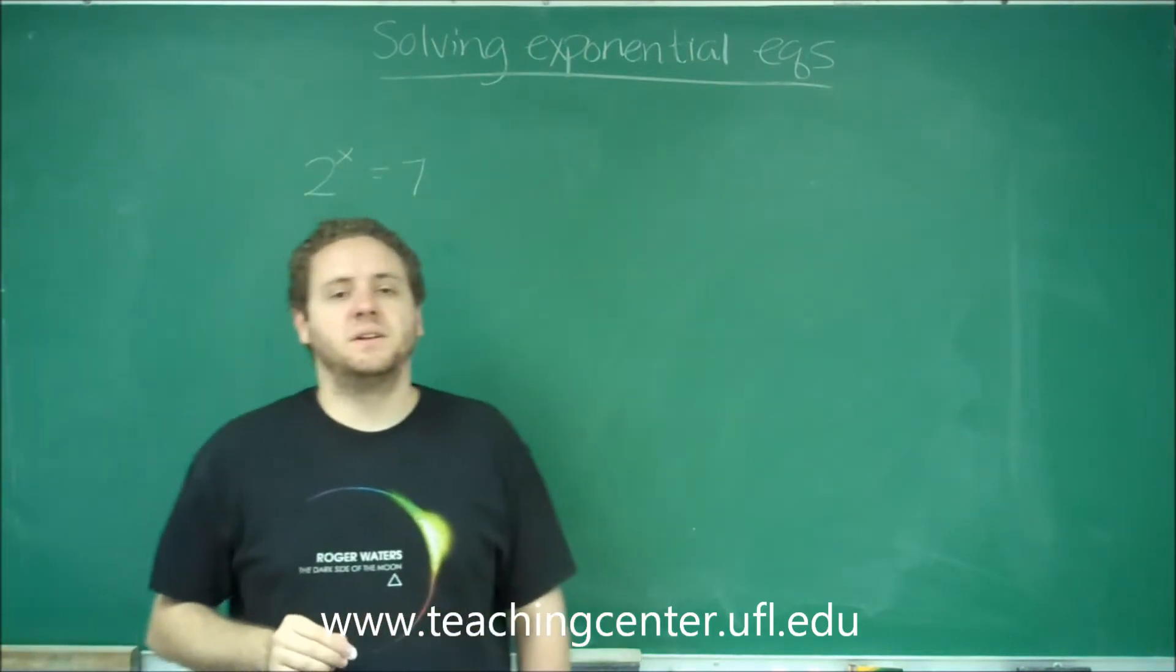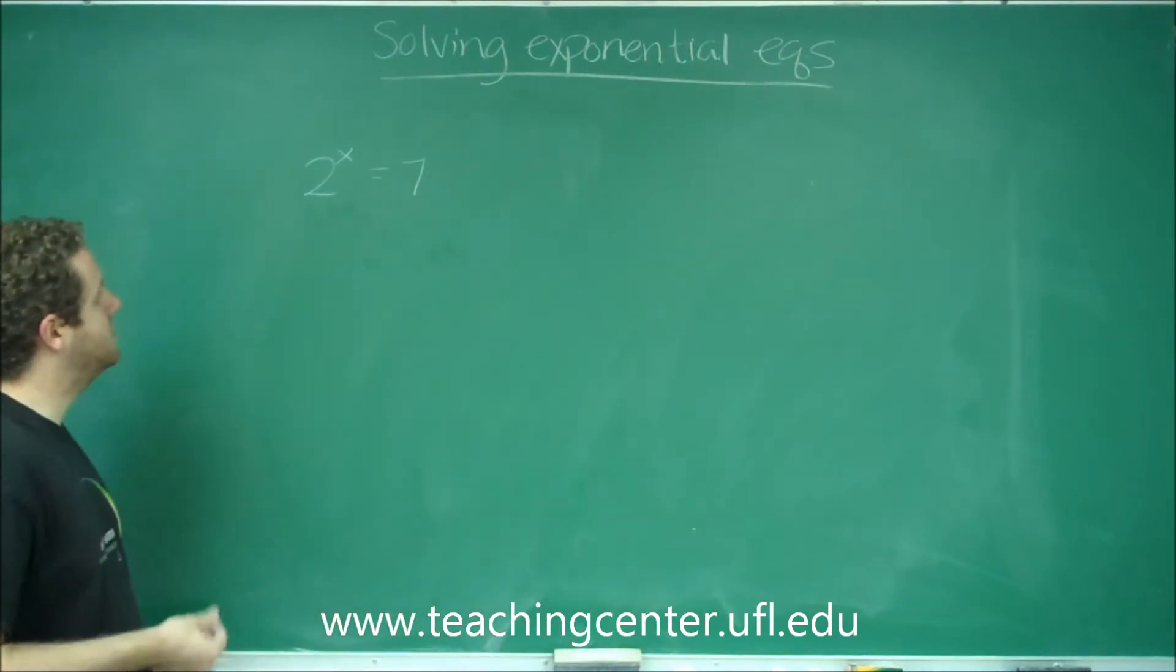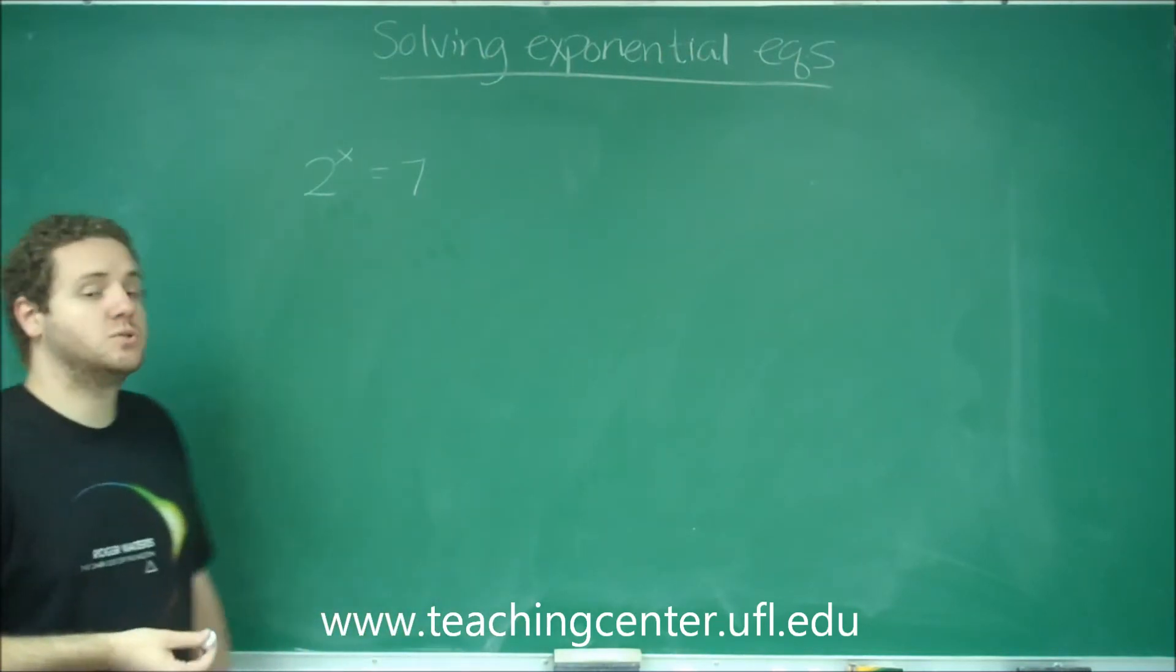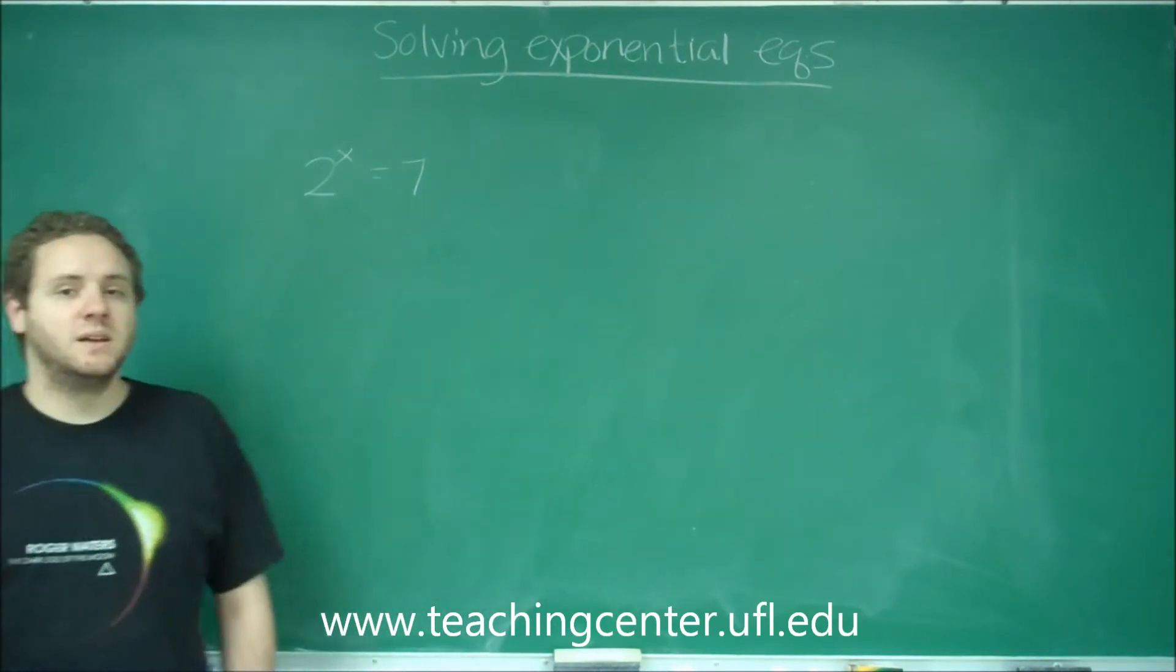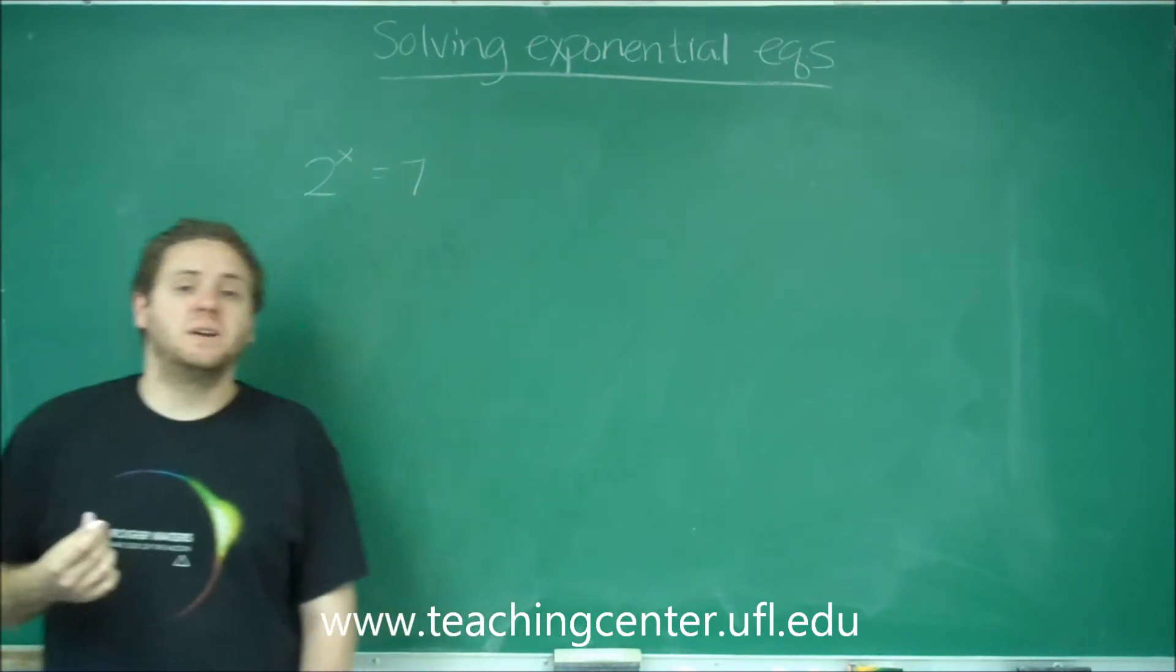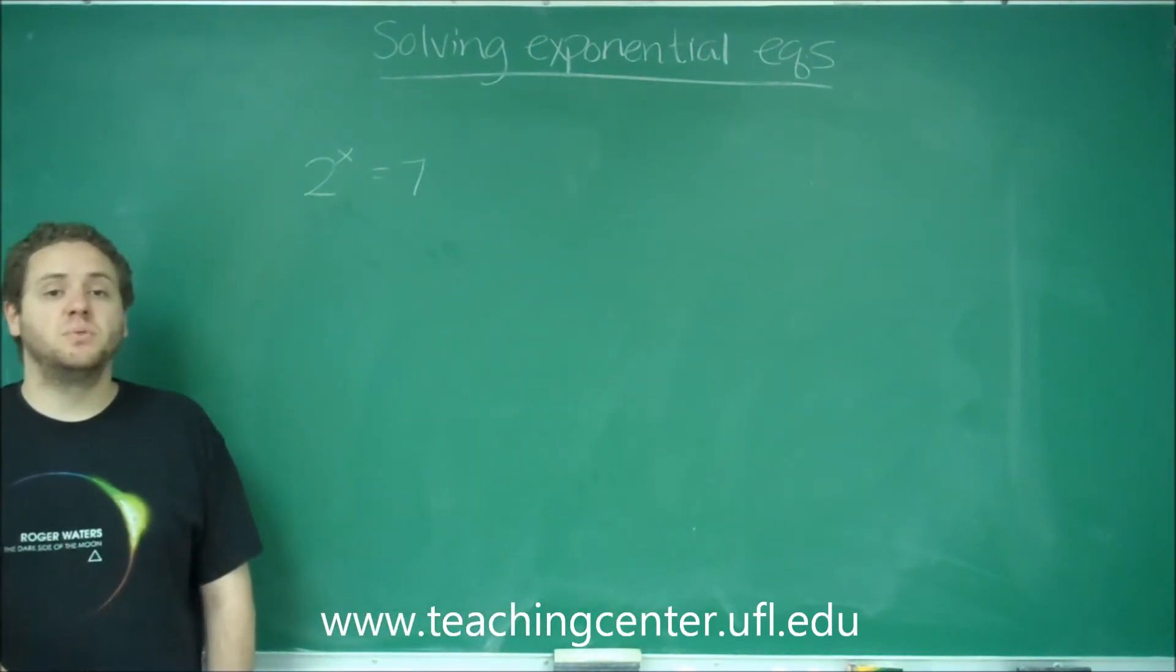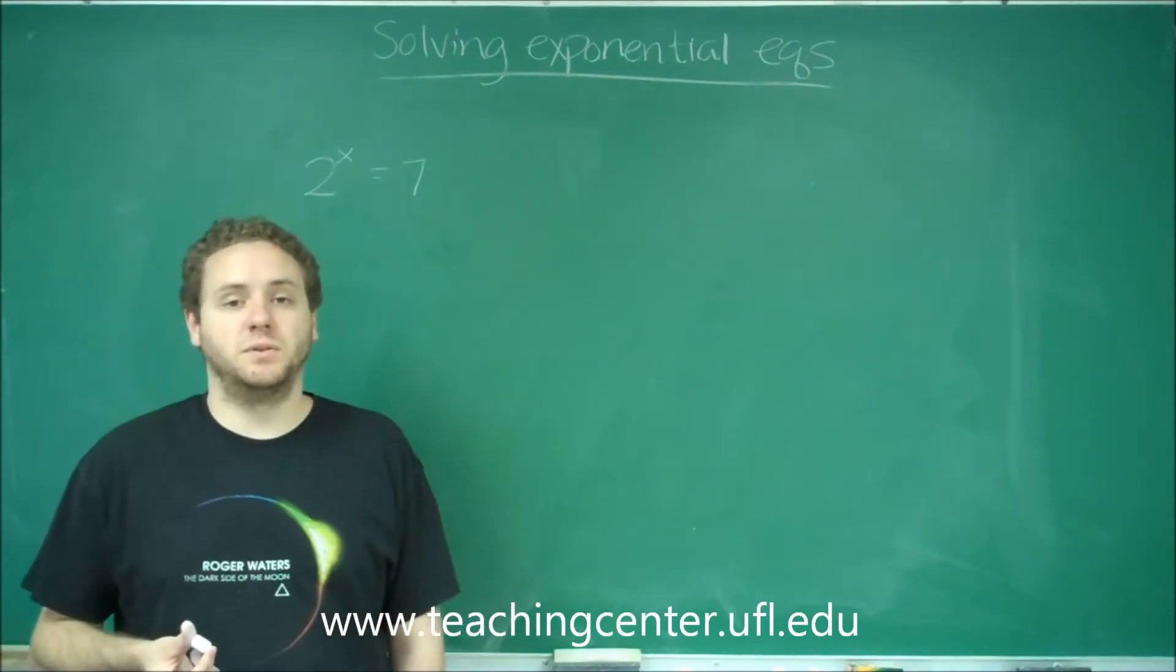If we have 2 to the x equals 7. Now what you always want to think here is, will this be a whole number? In this case it would be no, because 2 to the 2, if x was 2, 2 squared is 4, but 2 to the 3 would be 8. So obviously this is not going to work out to be a whole number, but to figure out exactly what it is, you have to do the reverse operation of a power, because you can't have the x be in the exponent.